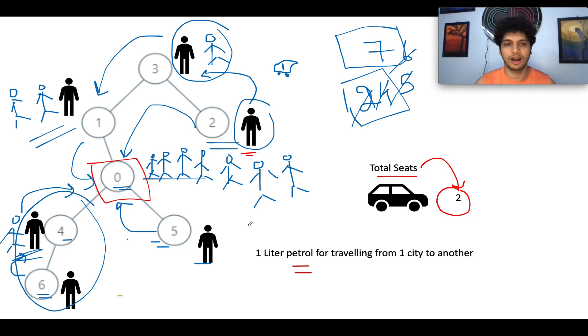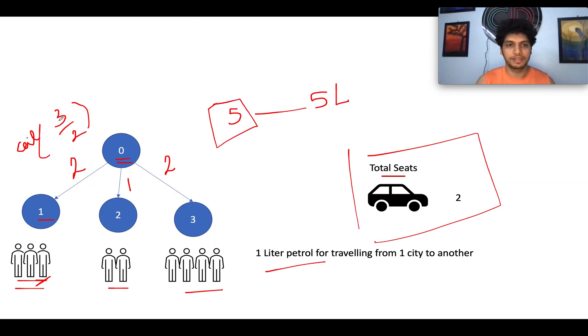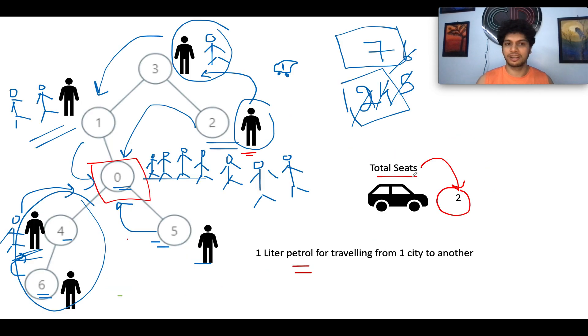Now comes the question, how can you algorithmize this? If you are able to identify the total number of passengers that would be there in each city, then your problem is solved. You can simply apply this formula: passenger count divided by total seat count, the ceiling value of it. And you can add those values up and that would give you the result. Why I am saying this, let's try and have a look at it. So the total number of passengers at city six happens to be one. So let's write one over here.